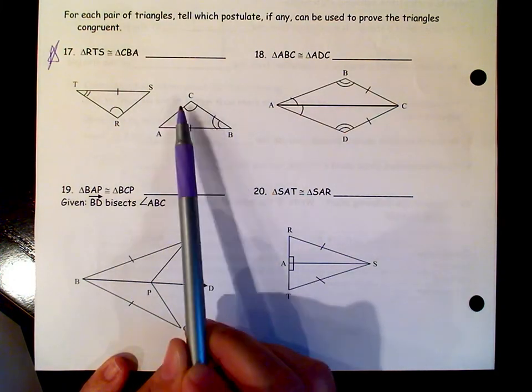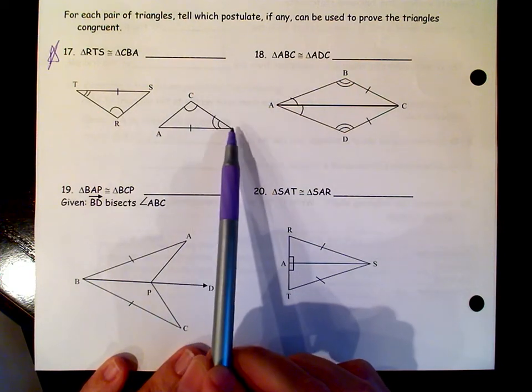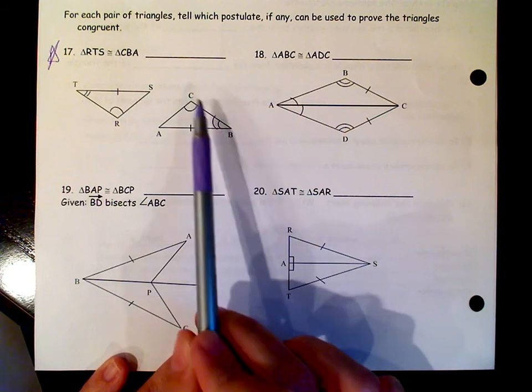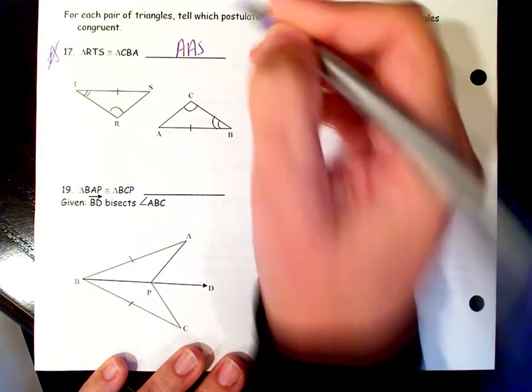Now that's two angles and one side, and the side is not the side that connects the vertices together. So therefore it's going to be angle, angle, side.